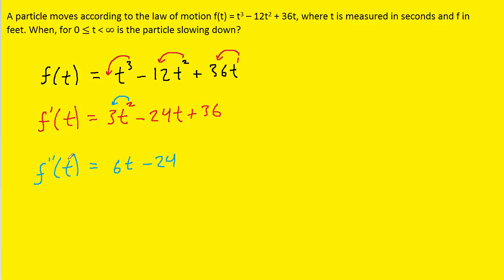The reason we want to come up with both a velocity and acceleration function is because when a question states that a particle is slowing down, that means the velocity and acceleration are pointing in opposite directions. For example, if a particle's velocity was pointing to the right, then in order to slow it down, we would want the acceleration to point in the opposite direction — to the left — or vice versa. So the basic idea is that we want the acceleration and the velocity to have opposite signs.